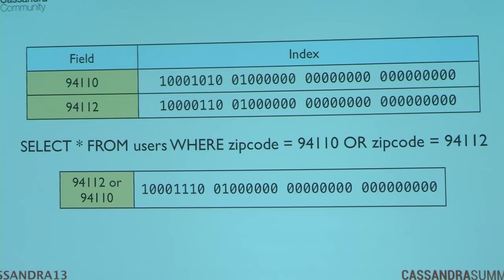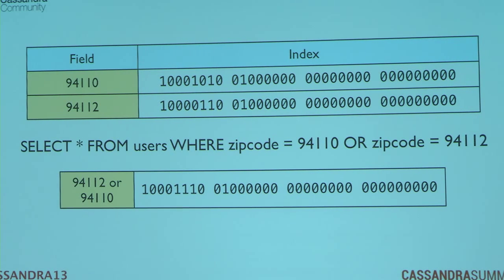If I want to select all users that come from two zip codes, it's just a union of those two arrays. I go through with a bitwise OR operation and combine the two, and out pops a result containing the set ones from both bit vectors. If I want all users where zip code equals 94110 or 94120, it's just the combination of those two.